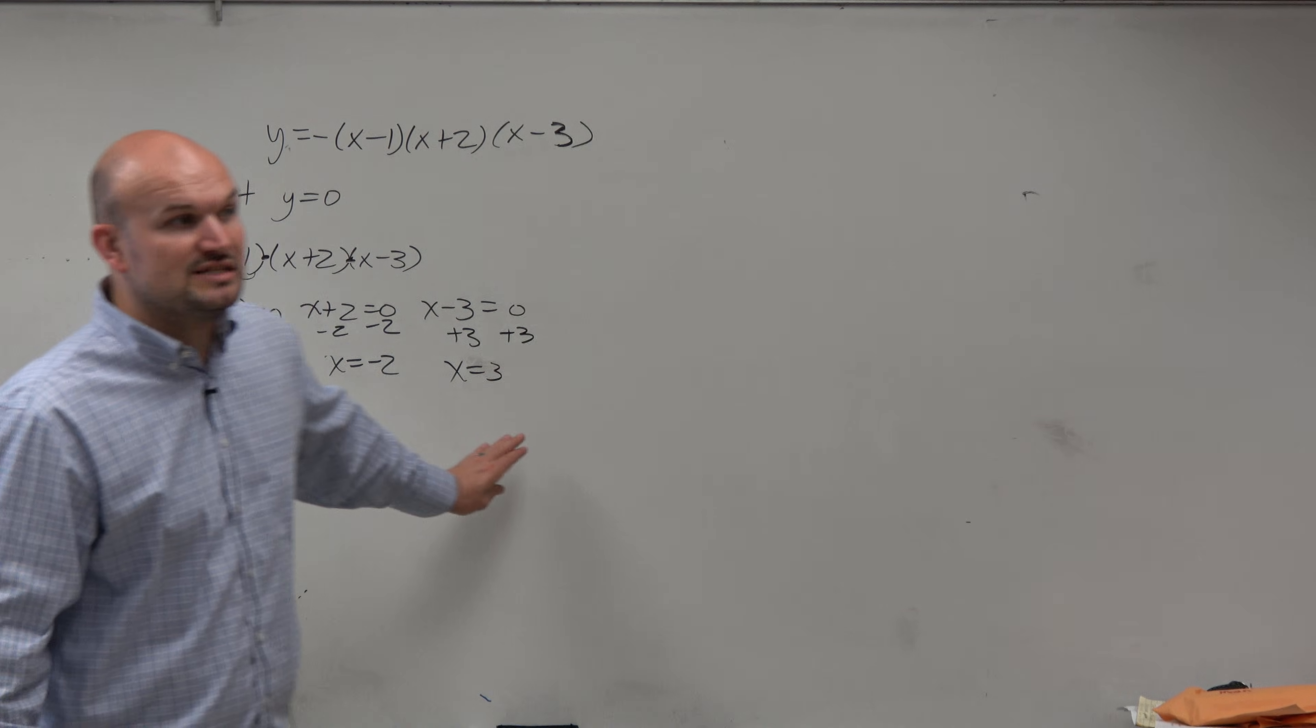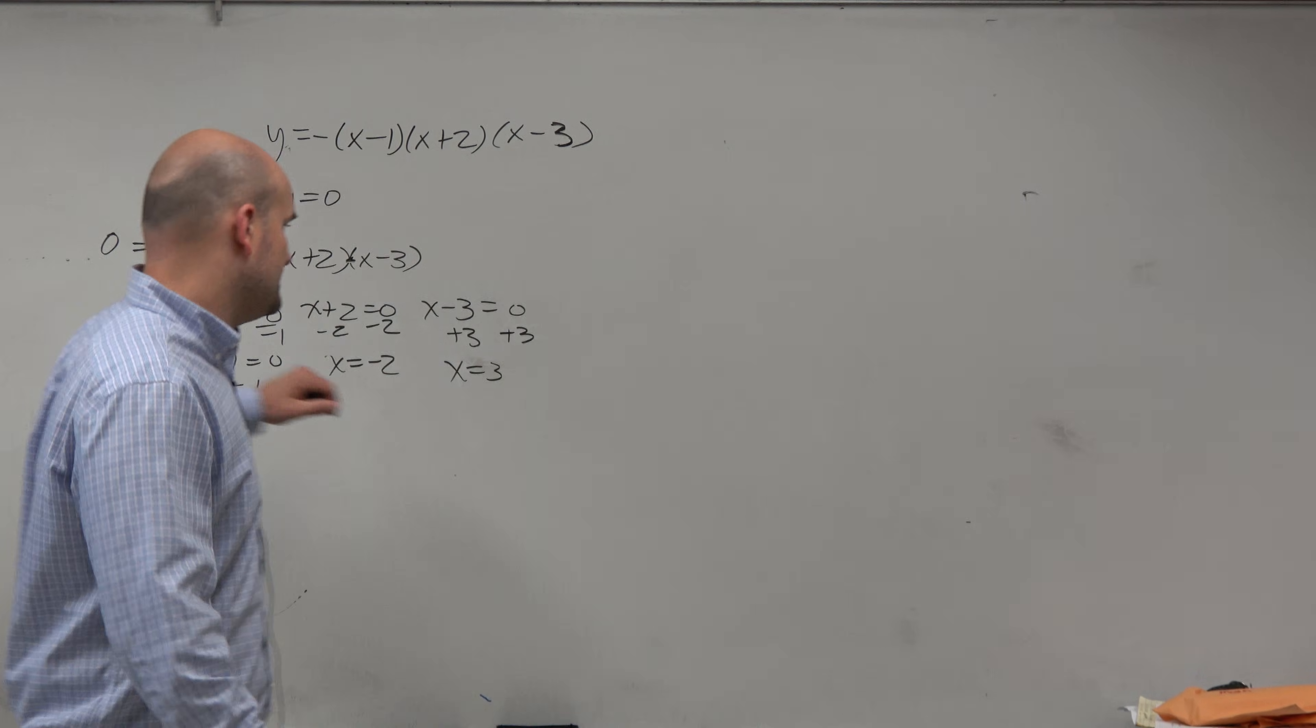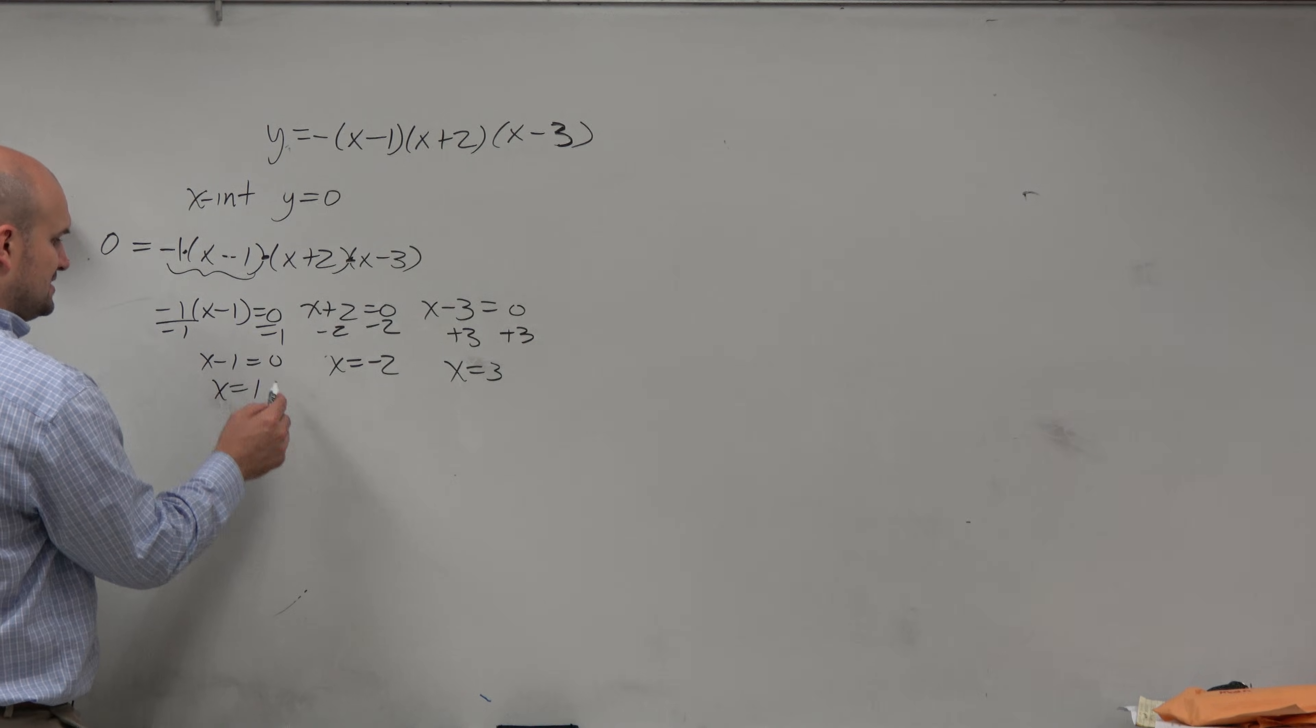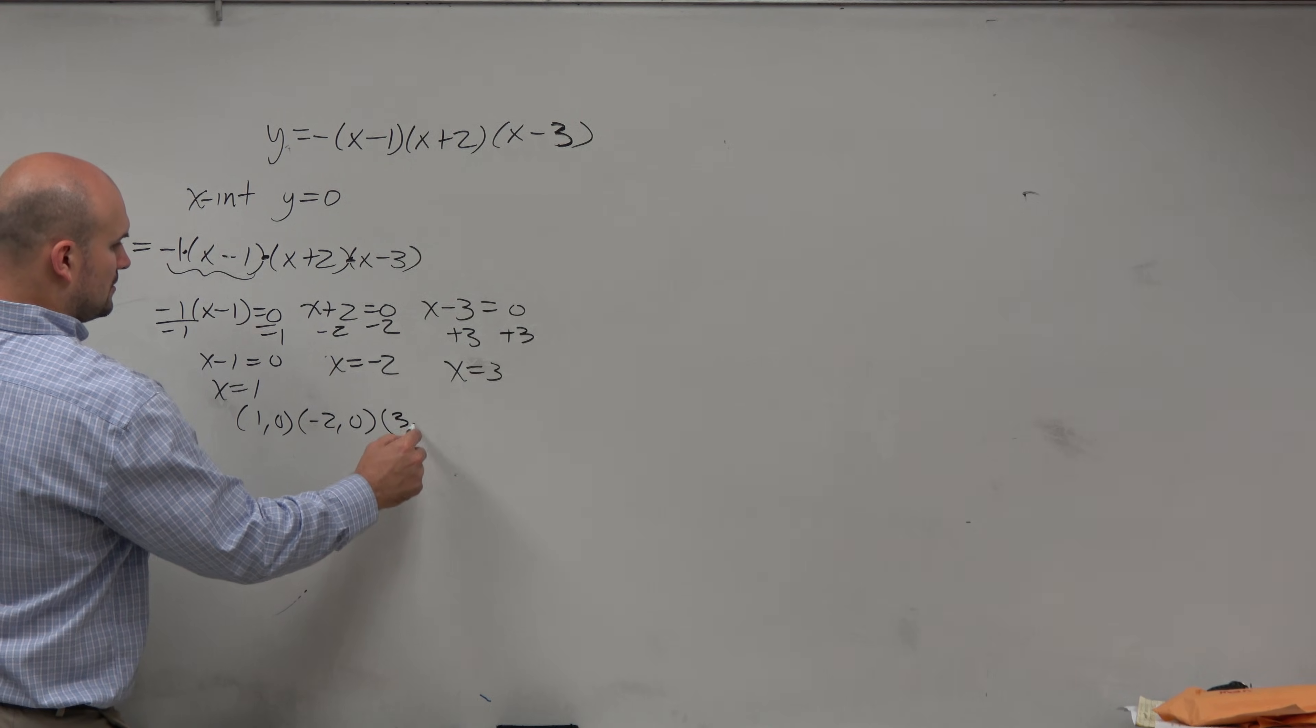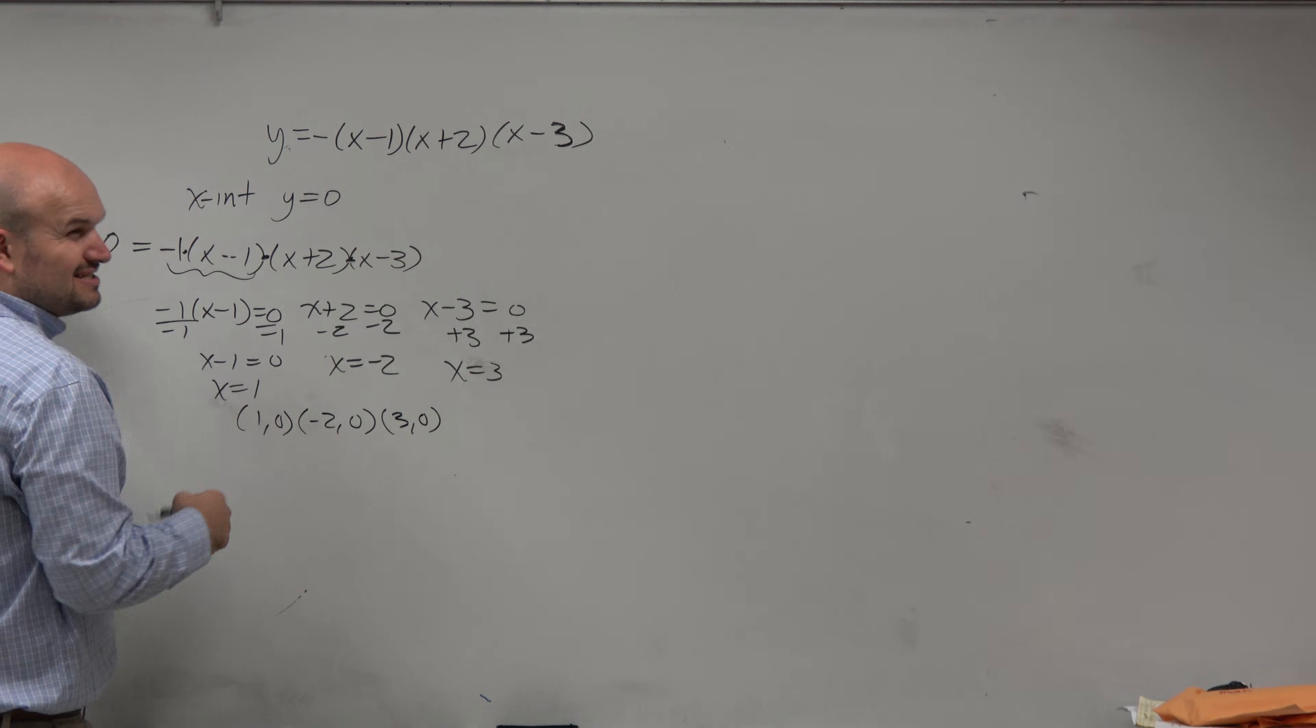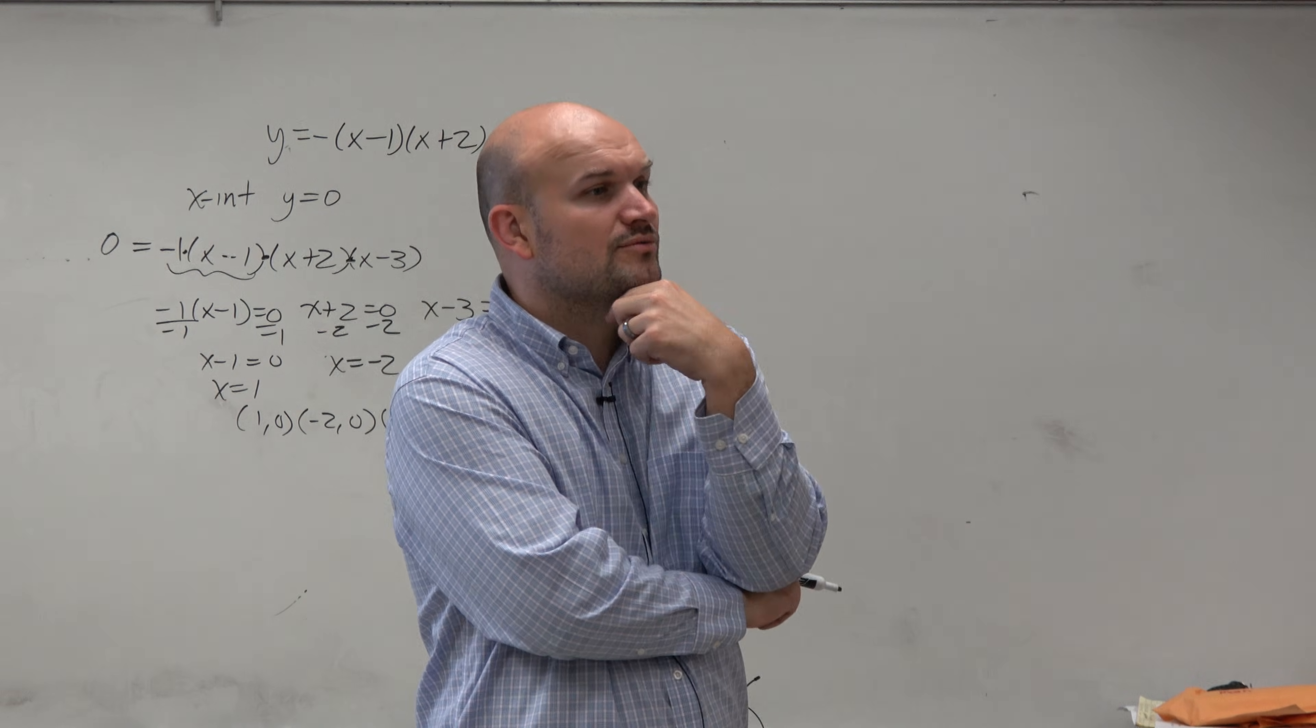So these are all of the x-intercepts. There's a couple different ways we can label these. We can label them just like this. We can also label them as coordinate points. And a lot of times, does anybody know another name for the x-intercepts of a function sometimes, or at least the real x-intercepts? Yeah, a lot of times we call them the real zeros.